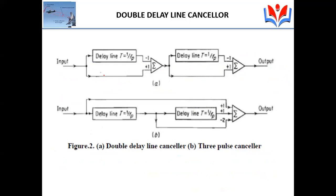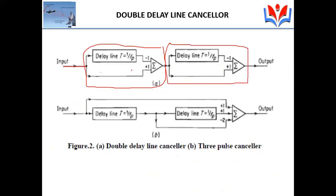This is the double delay line canceller representation. The input goes into one delay line canceller followed by another. We can implement the same as a single structure where the input is given a weightage of minus 2 for the one-delay term, plus 1 for the two-delay term, and plus 1 for the direct input. These two implementations — the cascaded double delay and the three-tap structure — give the same response. This is called the three pulse canceller, also referred to as the double delay line canceller.